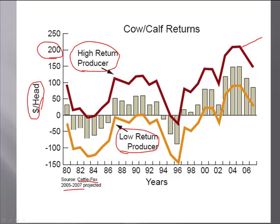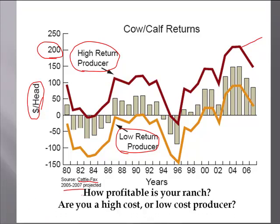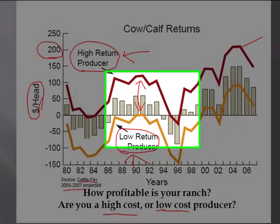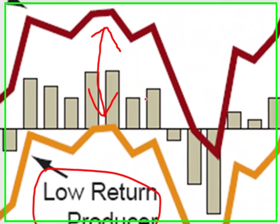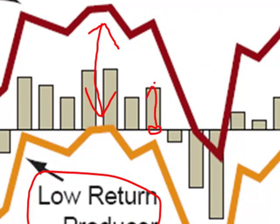So, how profitable is your ranch? Are you a high-cost producer or a low-cost producer? High-cost producers are the low-return group, while low-cost producers — those with a low unit cost of production — fall into the high-return group. Most producers really don't know where they fall. They don't know how to figure their unit cost of production number. Calculating your unit cost of production will help you determine where you stand, and if you're in the low-return group, the next question becomes: how do I move up? That's really the crux of this whole thing.